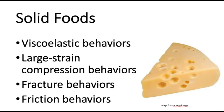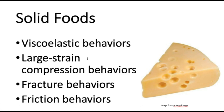On to solid foods, like this cheese. This cheese holds its own shape — you can see it was sliced right here and it's holding that shape very nicely; it's not going to flow under its own weight. With solid foods, we look at viscoelastic behaviors again. We have high elastic behavior here because it's holding its own shape. Viscous behavior can also tell us something about large strain compression behavior — when you squish it between your fingers, does it have a sharp fracture? Or does it mush without a sharp fracture plane, like jello versus Swiss cheese? That can tell us what to expect when we bite into this product.